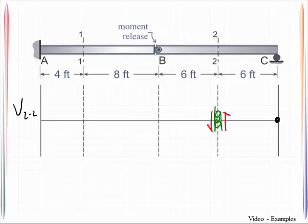Point C, I can rotate there but I can't move up and down. Point A, I can't move up and down and I can't rotate. And so I can't rotate until I get to a moment release.